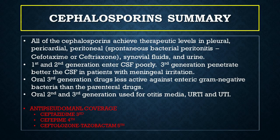Let's summarize the most important features of cephalosporins. All cephalosporins achieve therapeutic levels in pleural, pericardial, peritoneal — for example in spontaneous bacterial peritonitis, especially with cefotaxime or ceftriaxone — synovial fluids, and urine. The first and second generations enter the CSF poorly, but the third generation penetrates the CSF in patients with meningeal irritation. Oral third generation drugs are less active against enteric gram-negative bacteria than parenteral drugs, and the oral second and third generations are used for otitis media, upper respiratory tract infections, and UTIs. The cephalosporins with anti-pseudomonal coverage are ceftazidime (third generation), cefepime (fourth generation), and the combination ceftolozane-tazobactam (fifth generation).